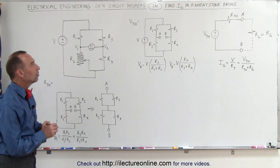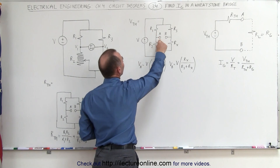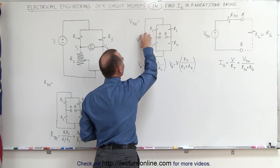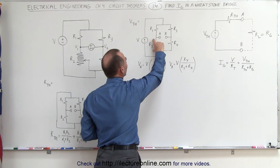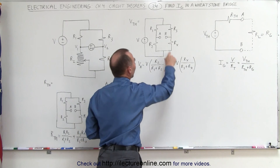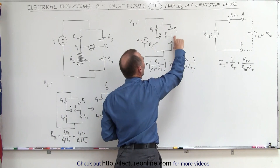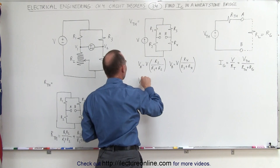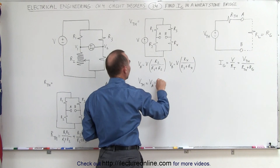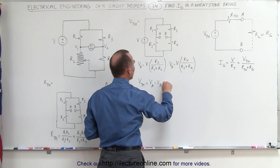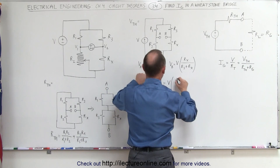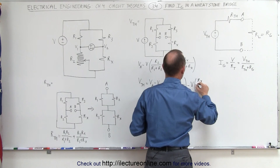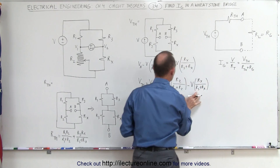Next, we need to find the Thevenin voltage. We reinsert the voltage source and find the voltage difference between A and B. The voltage at A equals the source voltage times the ratio R2 divided by R1 plus R2. The voltage at B equals the source voltage times Rx divided by R3 plus Rx. Taking the difference, the Thevenin voltage equals V times R2 divided by R1 plus R2, minus V times Rx divided by R3 plus Rx.